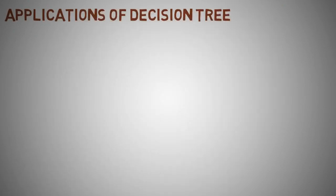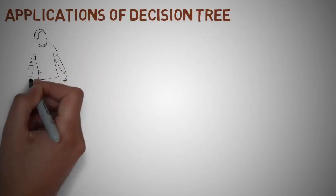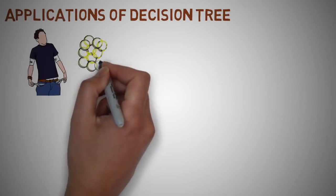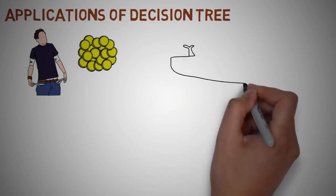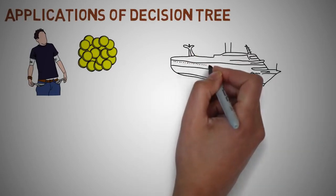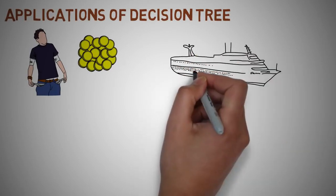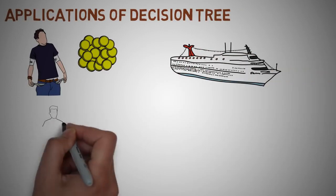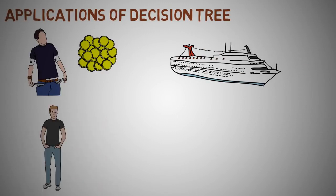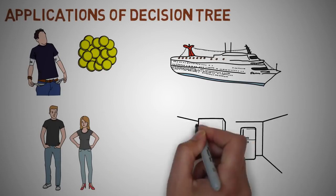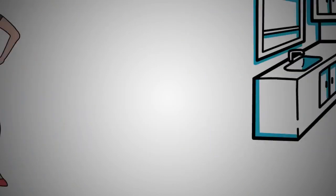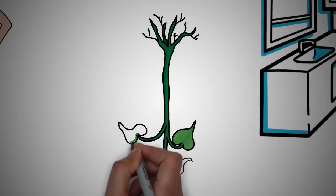If we look at some applications of the decision tree: we can predict whether a customer will pay his renewal premium with an insurance company, predict Titanic survival statistics, determine if a person is male or female based on their height and weight, or determine a price of a home based on how many rooms as well as the floor size. A decision tree is drawn upside down with its root at the top.